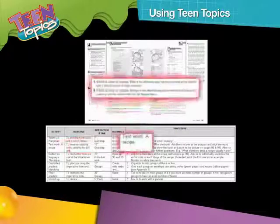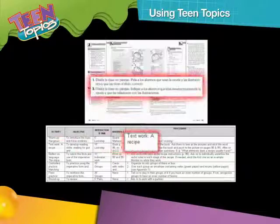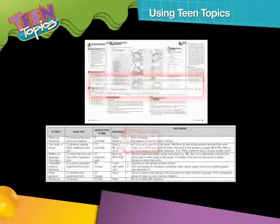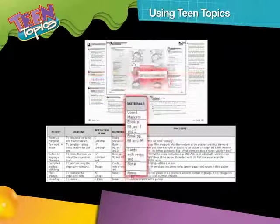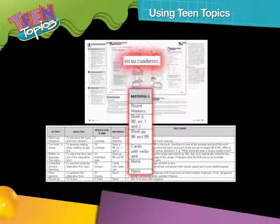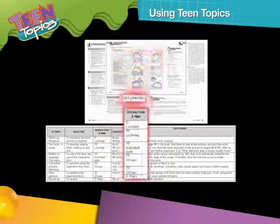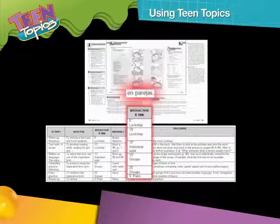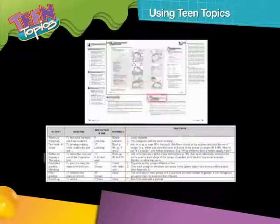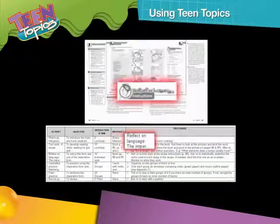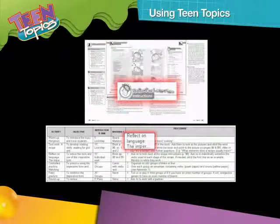Immediately after Comencemos, the teacher's guide describes the procedure you need to follow in order to conduct activities related to the text — that is, the doing stage of the experiential learning cycle. These instructions also tell you what materials you will need and the suggested pattern of interaction for each activity. The Reflect on Language box gives step-by-step instructions for this stage of the lesson and also provides a further explanation of how the language works so that you can better support learners. Remember that this stage comprises both the noticing and the learning stages of the experiential learning cycle.